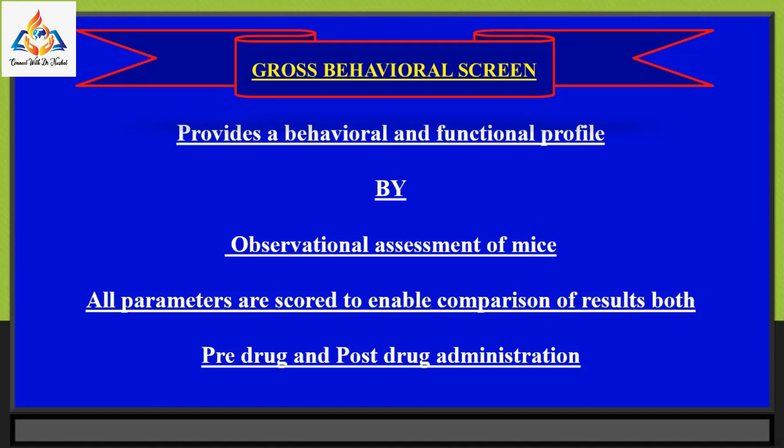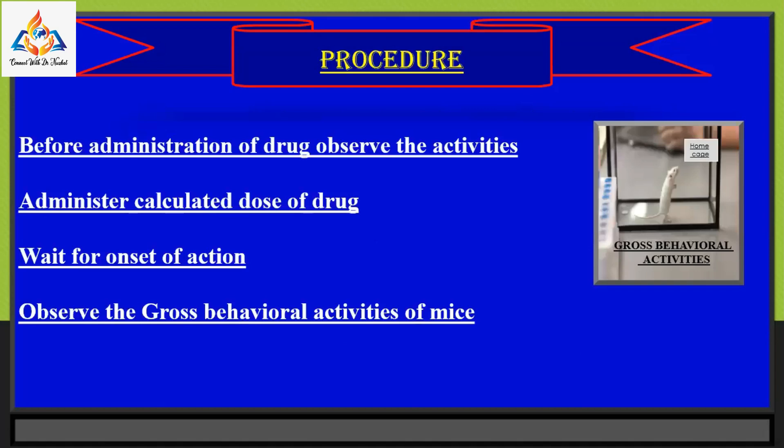All parameters are scored to enable comparison of results both pre-drug and post-drug administration. The procedure involves observing activities before administration of the drug, then administering a calculated dose, waiting for onset of action, and then observing the gross behavioral activities of mice. Now we come to the part where we talk about the behavioral activities.